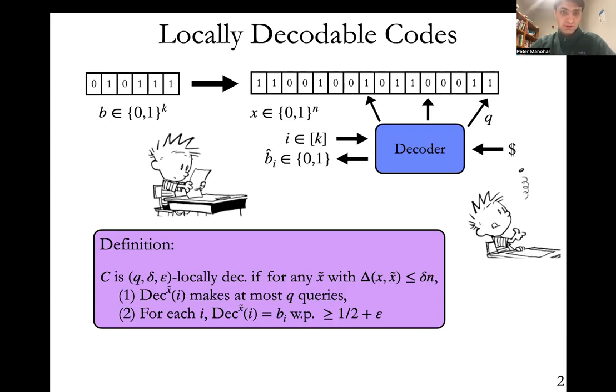Locally decodable codes are a pretty natural object to study, and they're indeed very useful. They're used in the construction of PCPs, for example in the proof of the PCP theorem. They're used in private information retrieval schemes, and also in average case to worst case reductions in complexity theory and many more things.